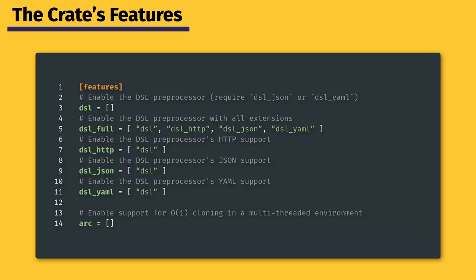Each generated parser is equipped with these features. The DSL family refers to the preprocessor, specifically the support for imports and includes that can be resolved locally or from the Internet, while the ARC refers to the atomic reference counter, a structure found in the Rust standard library that allows ownership of a structure without actually duplicating the heap allocation in multi-threaded contexts. By disabling it, the parser behaves the same way but without multi-thread support. To date, no feature is enabled by default.